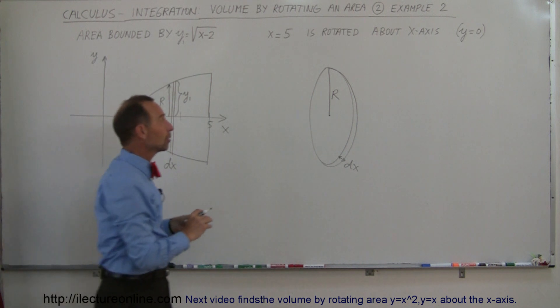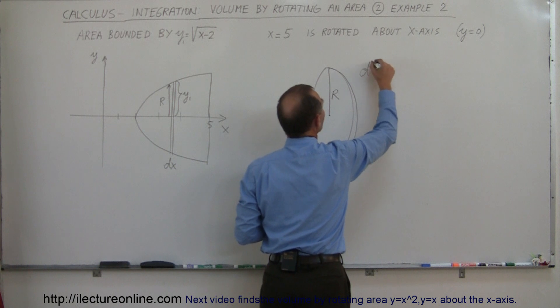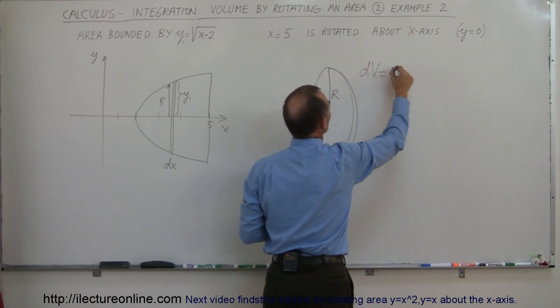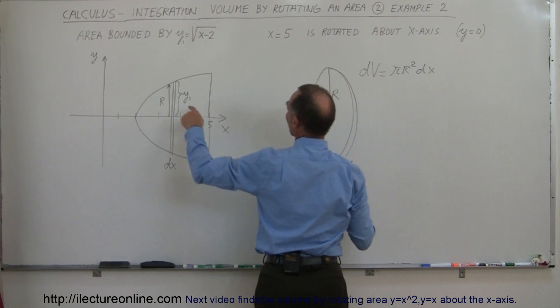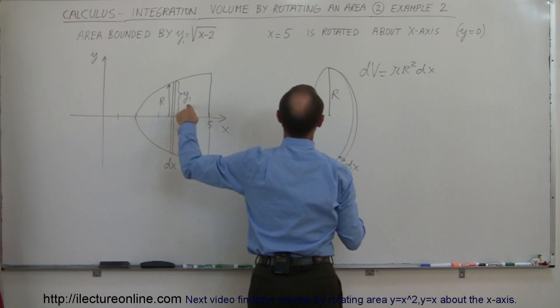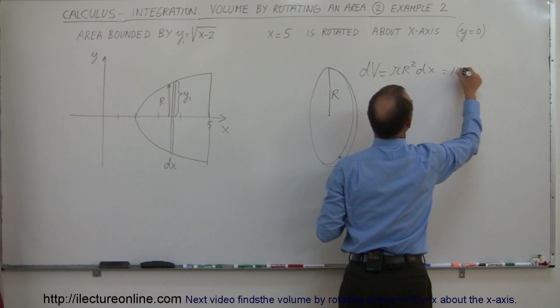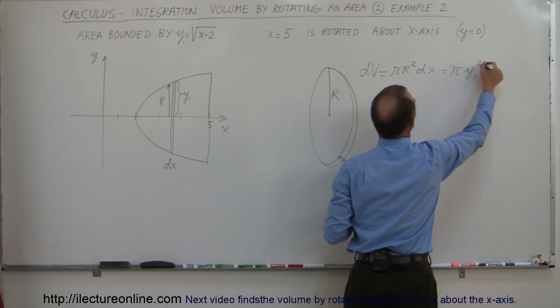The small volume dv can be defined as the area of this disc, which is π r squared, times the thickness, which is dx. And of course, since r is equal to y1, that would be equal to π times y1 squared dx.